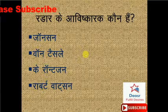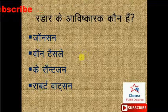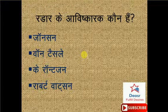Radar ke aavishkarak kaun hain? Options: Johnson, Ron Tesla, K. Roentgen, Robert Watson. Toh iska sahih jawab hai, doston, option number D - Robert Watson.